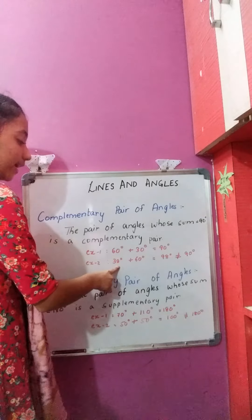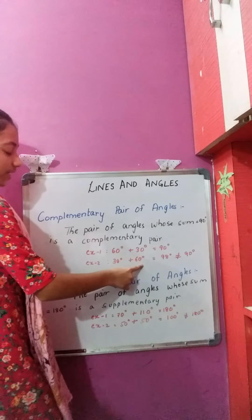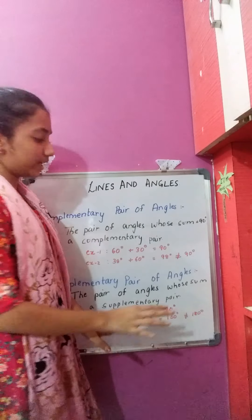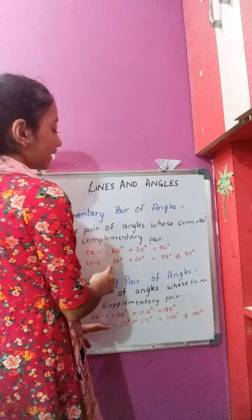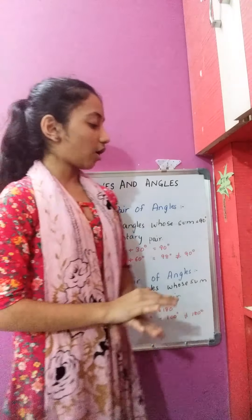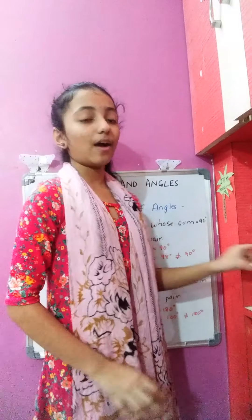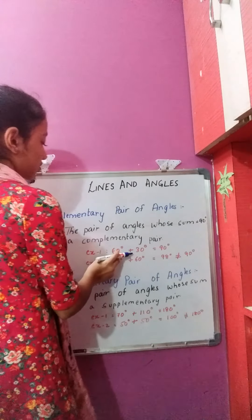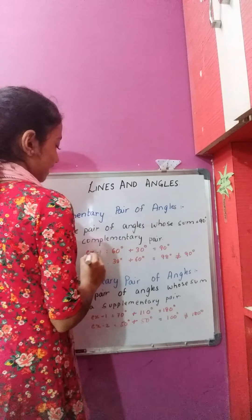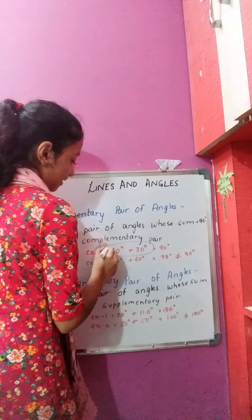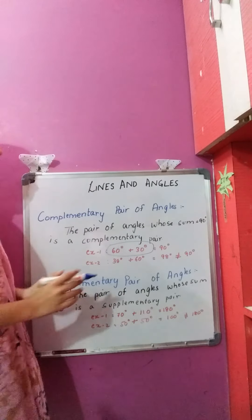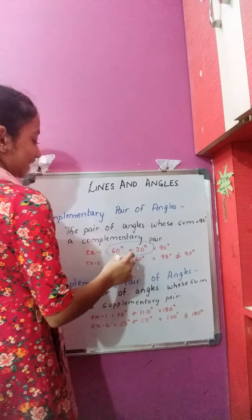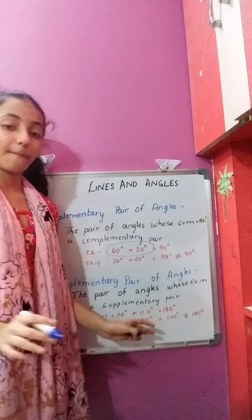Let's take example 2: 38 degrees plus 60 degrees equals 98 degrees, which is not equal to 90 degrees. So this given pair is not a complementary pair. To summarize, 60 and 30 degrees form a complementary pair, but 38 and 68 degrees do not.